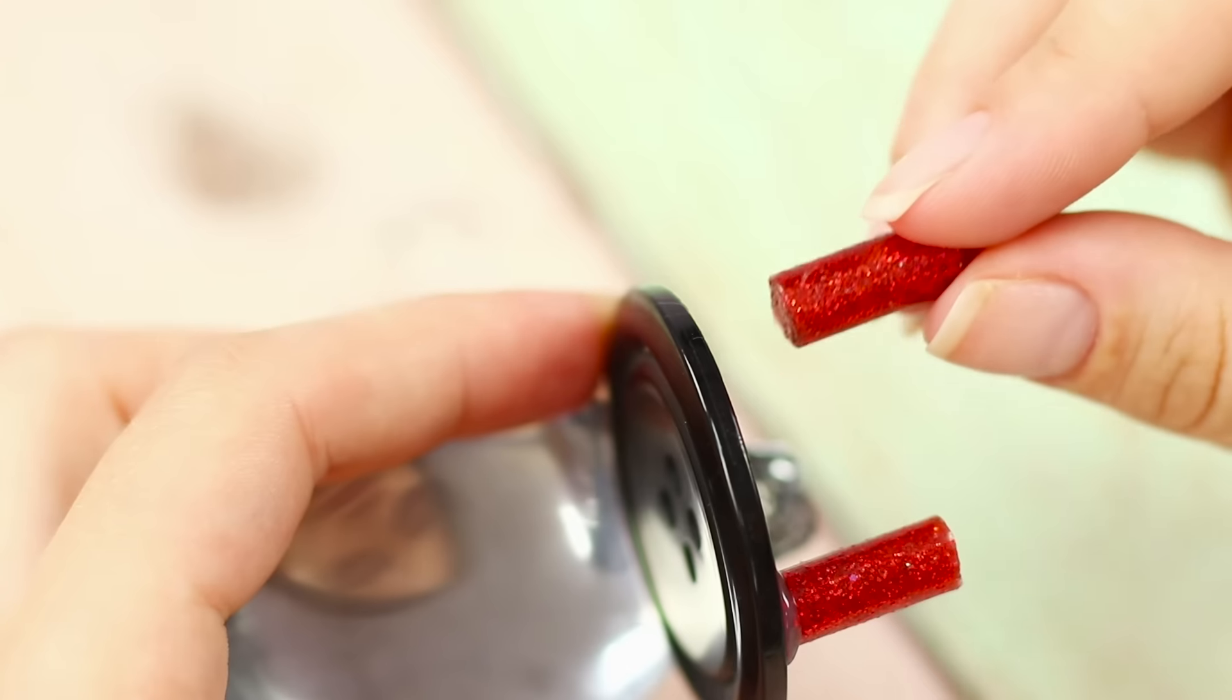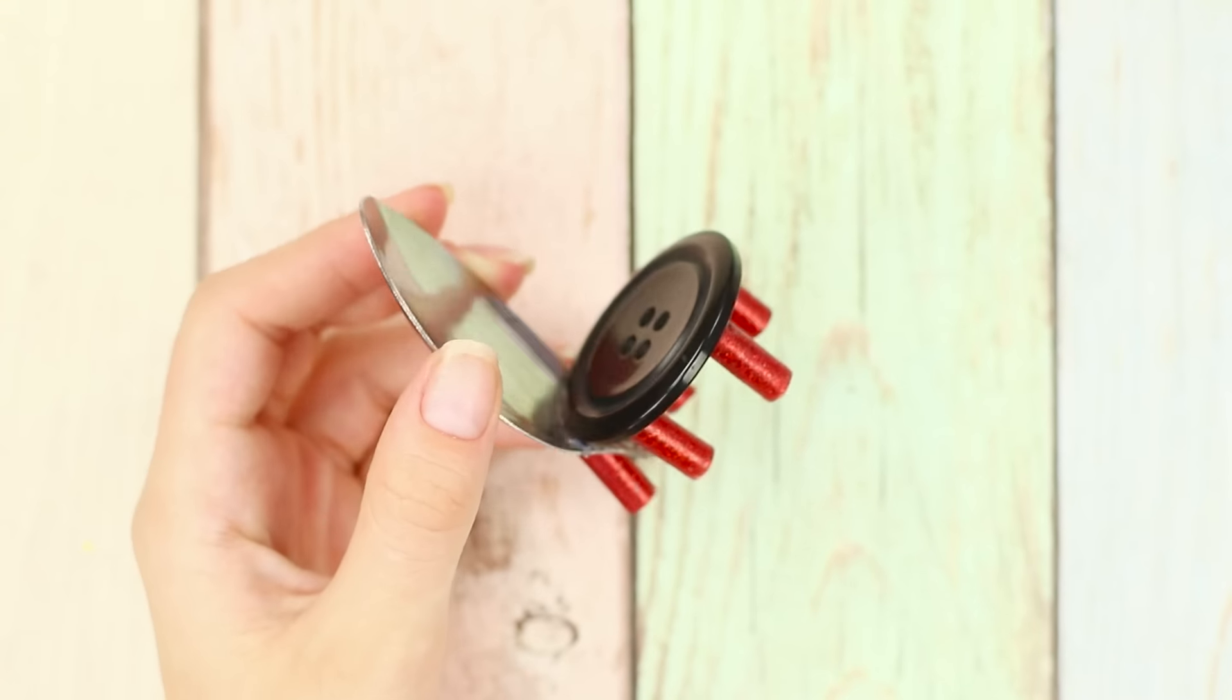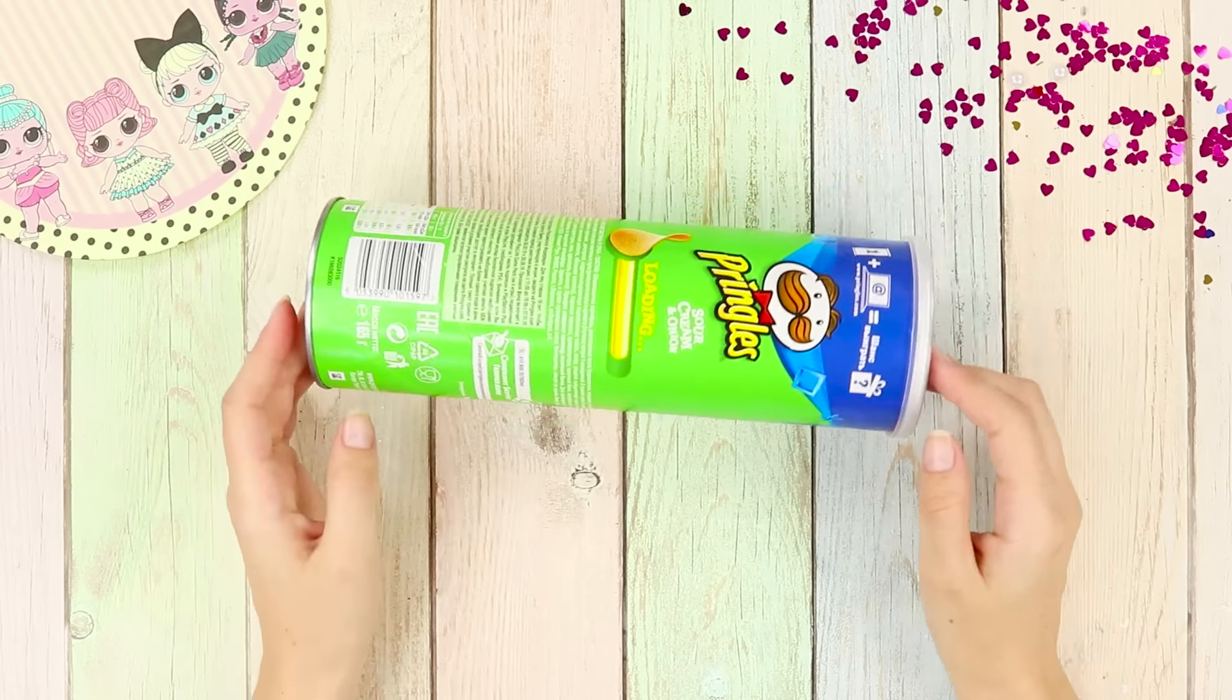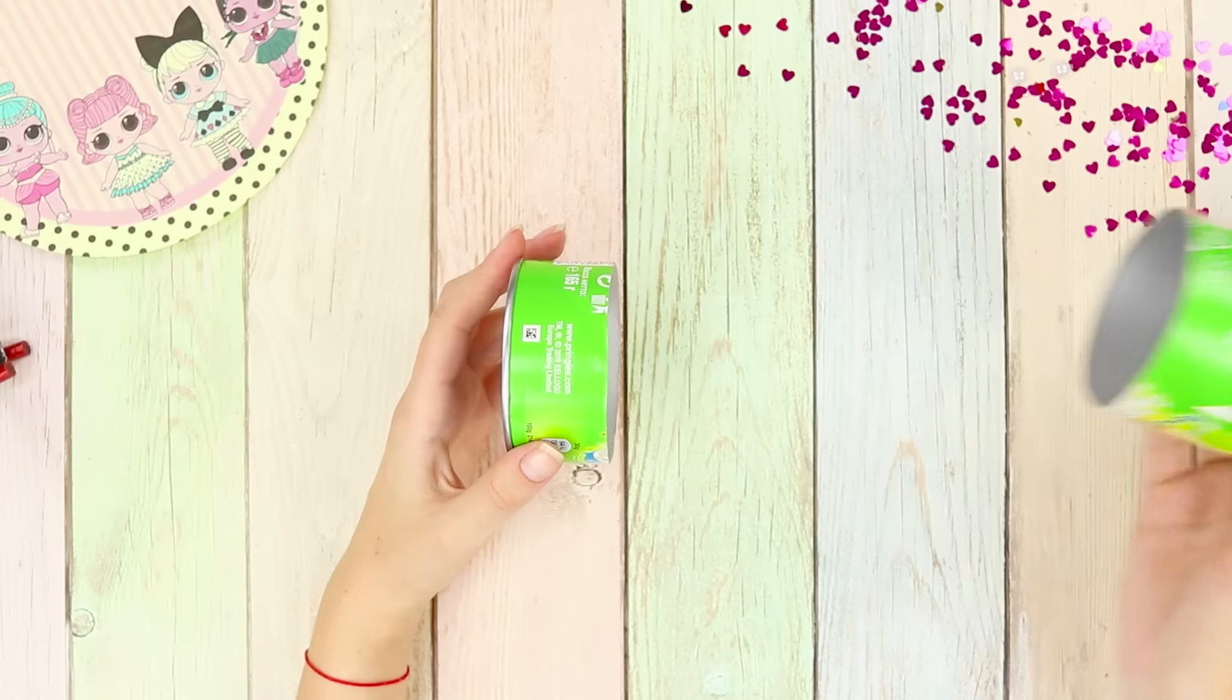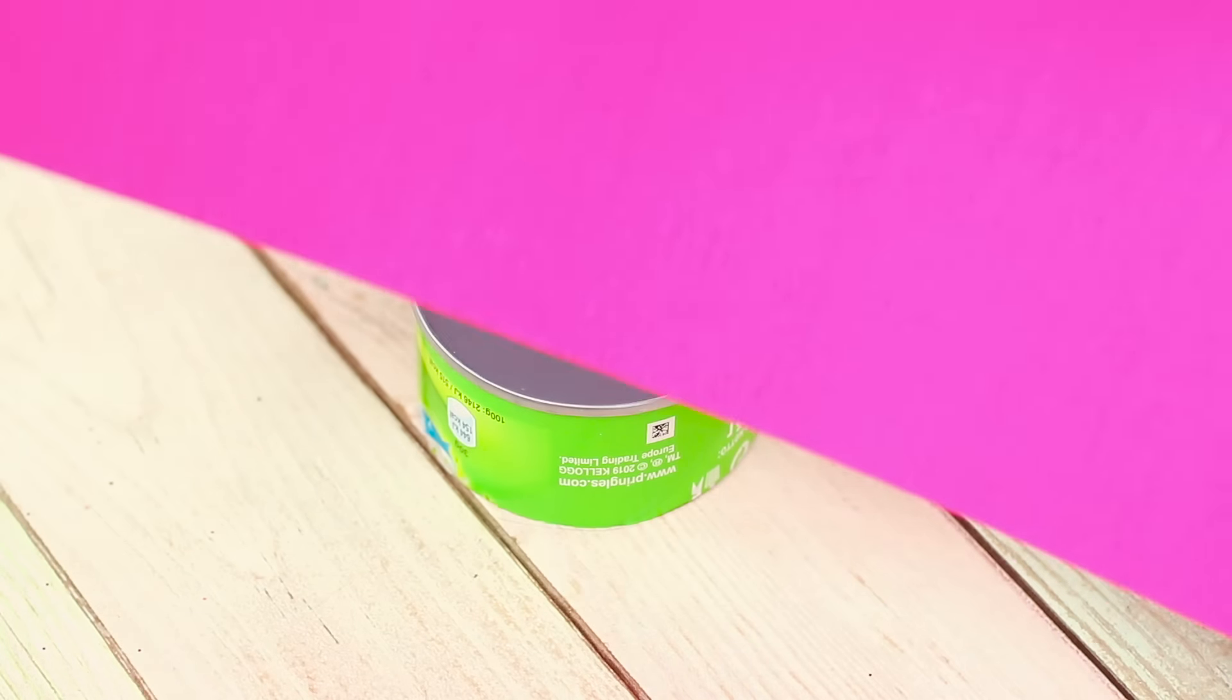Glue them to the button as legs. What a cute chair! Next, you need a Pringles container. Cut the bottom edge with a utility knife and cover it with bright fabric.